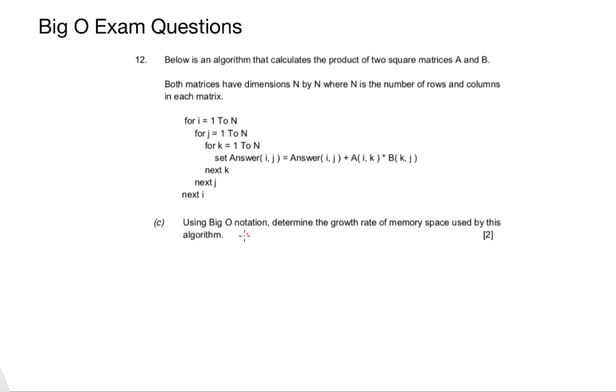In the next question, it asks us to use Big O notation and determine the growth rate of memory space used by this algorithm. Now in the previous question, it asked us about time performance. This is asking us about memory space. So we need to think about what we're actually going to store in our algorithm and how efficient that is using Big O notation.